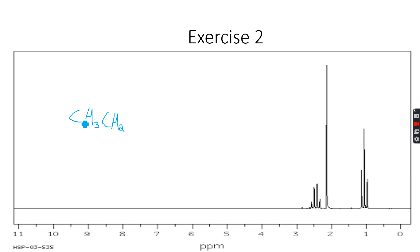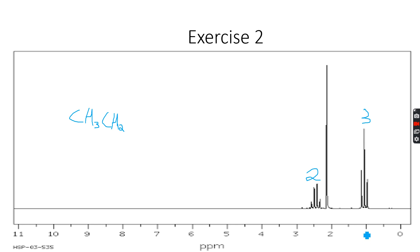We've already deciphered two of the three peaks and are left with one. Looking at the integration: three hydrogen atoms, two hydrogen atoms, and one remaining peak. That peak is near 2.2 ppm, and when I look at the data booklet at 2.2, I get CH3CO.